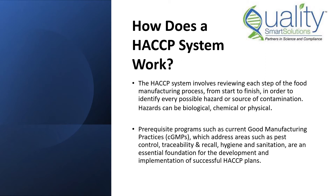The HACCP system involves reviewing each step of the food manufacturing process from start to finish in order to identify every possible hazard or source of contamination. Hazards can be biological, chemical, or physical in nature.